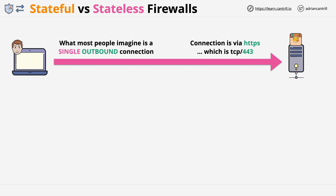Below the surface, at layer 3, this single connection is handled by exchanging packets between the source and the destination. Conceptually, you can imagine that each connection — in this case, an outgoing connection from Bob's laptop to the server — is actually made up of two different parts.